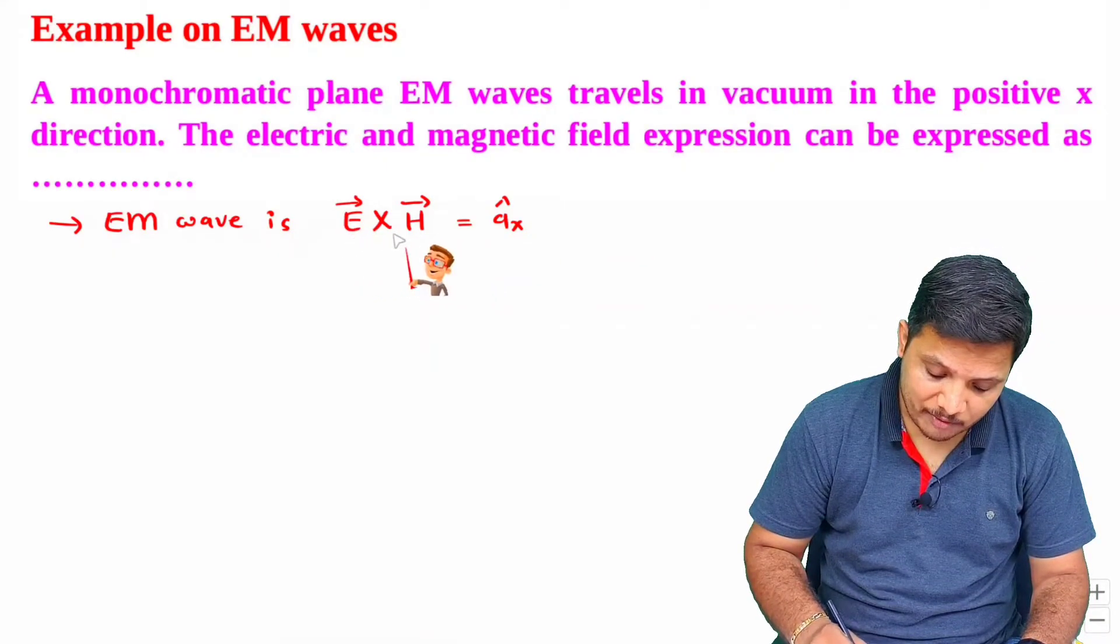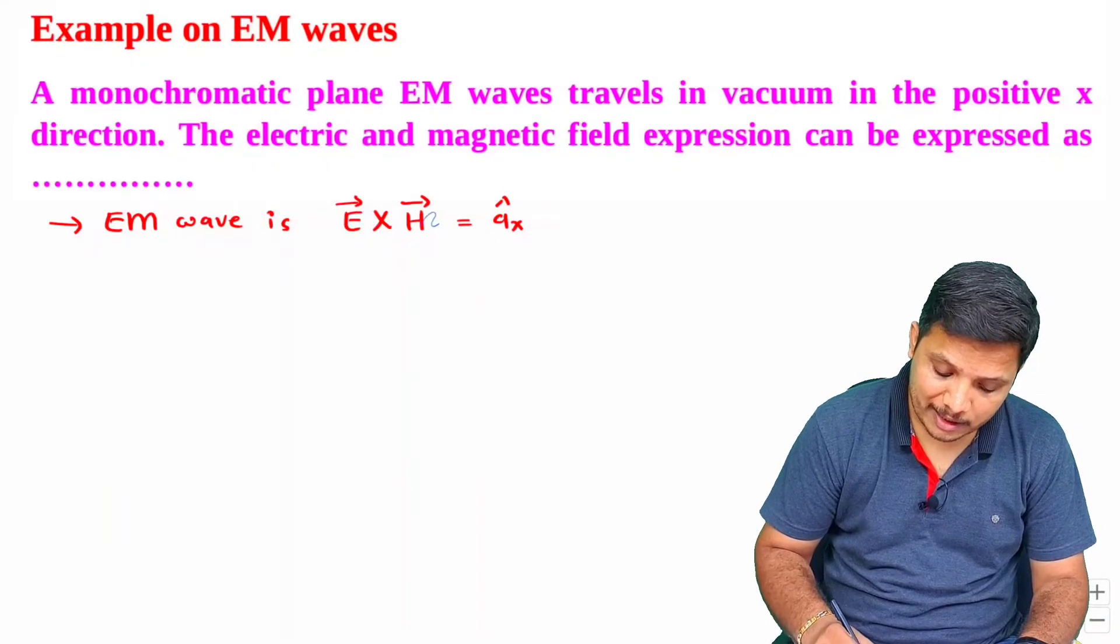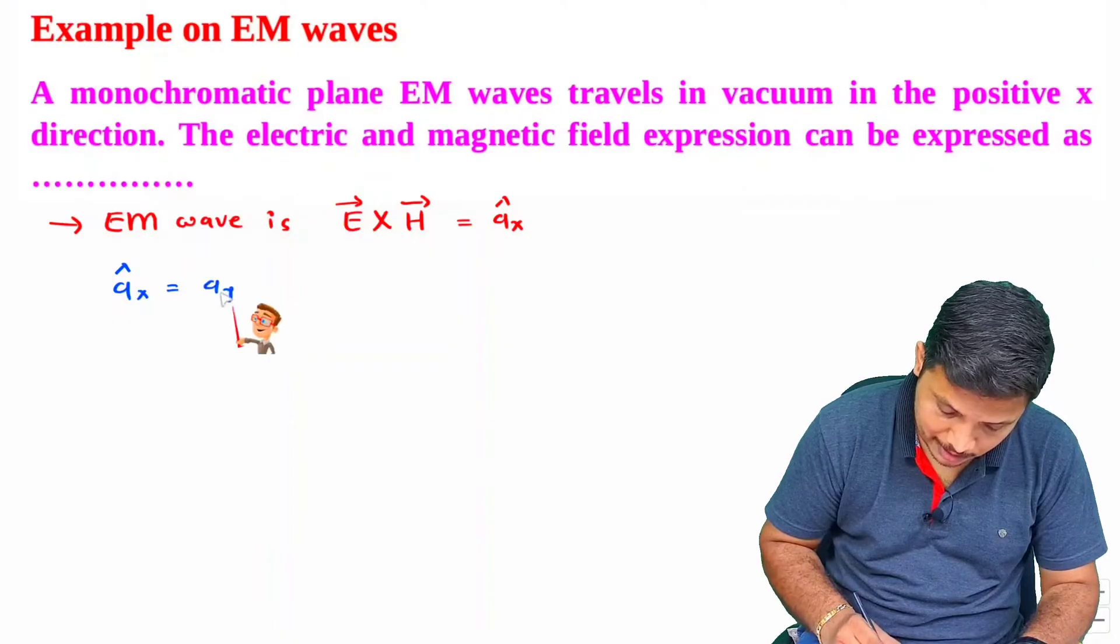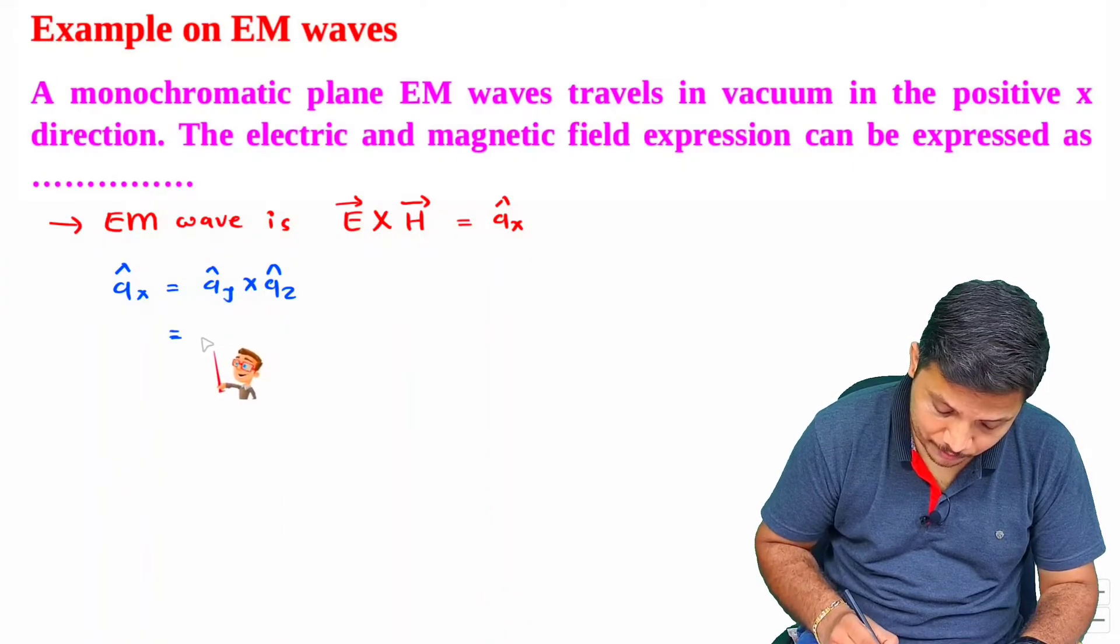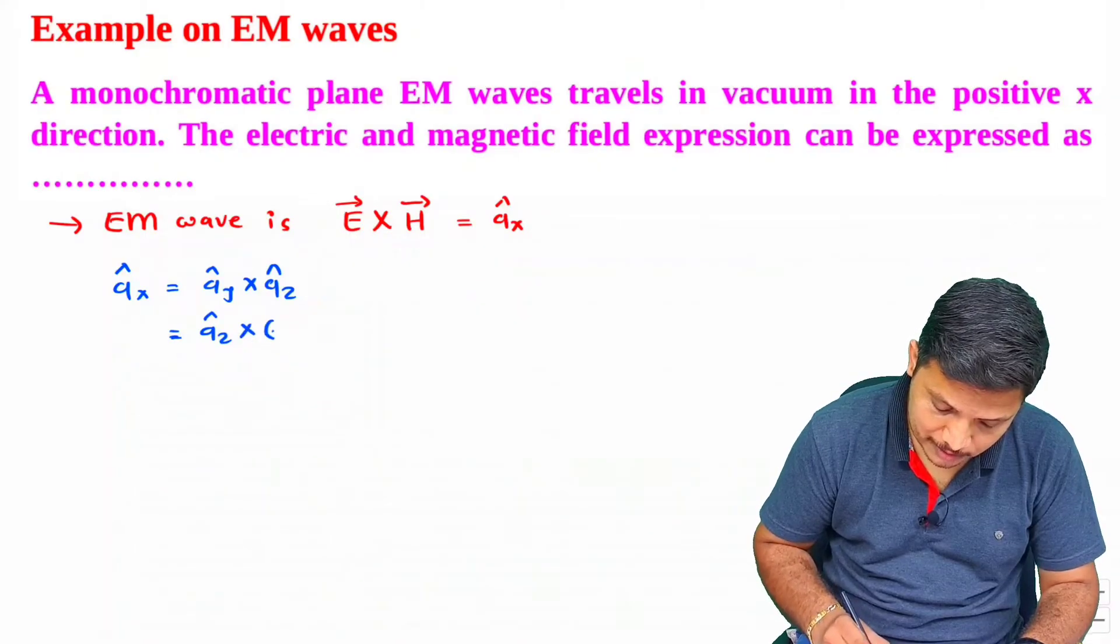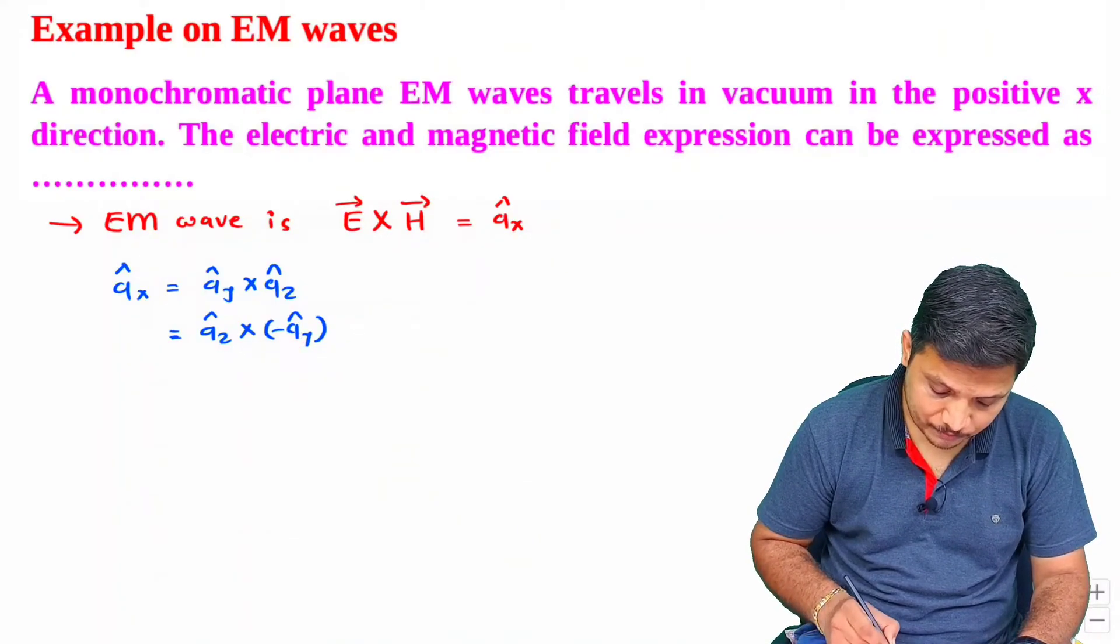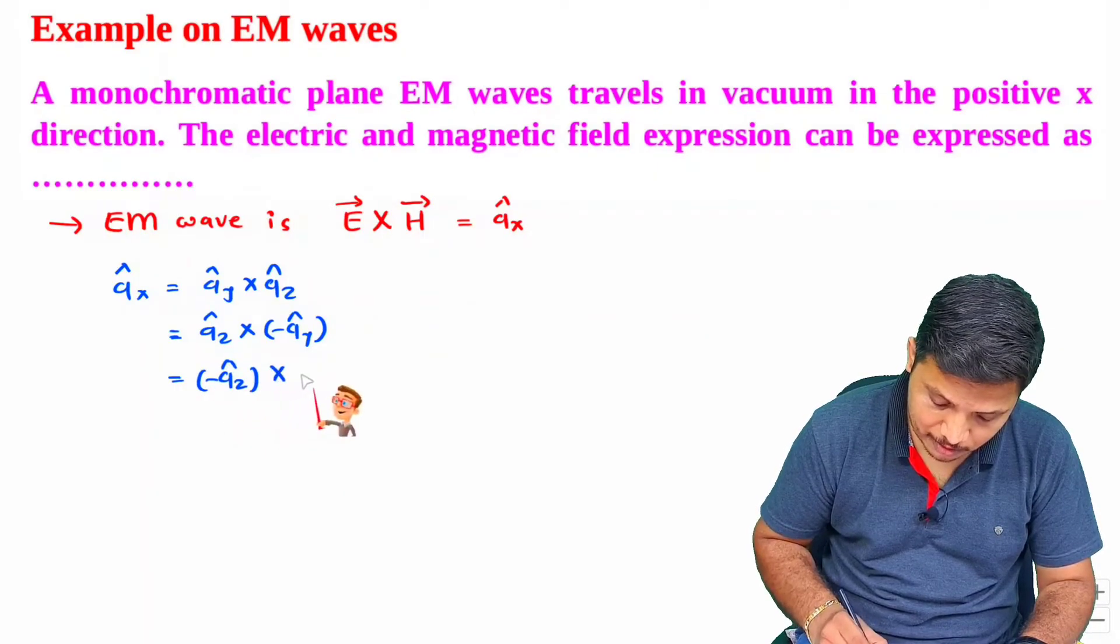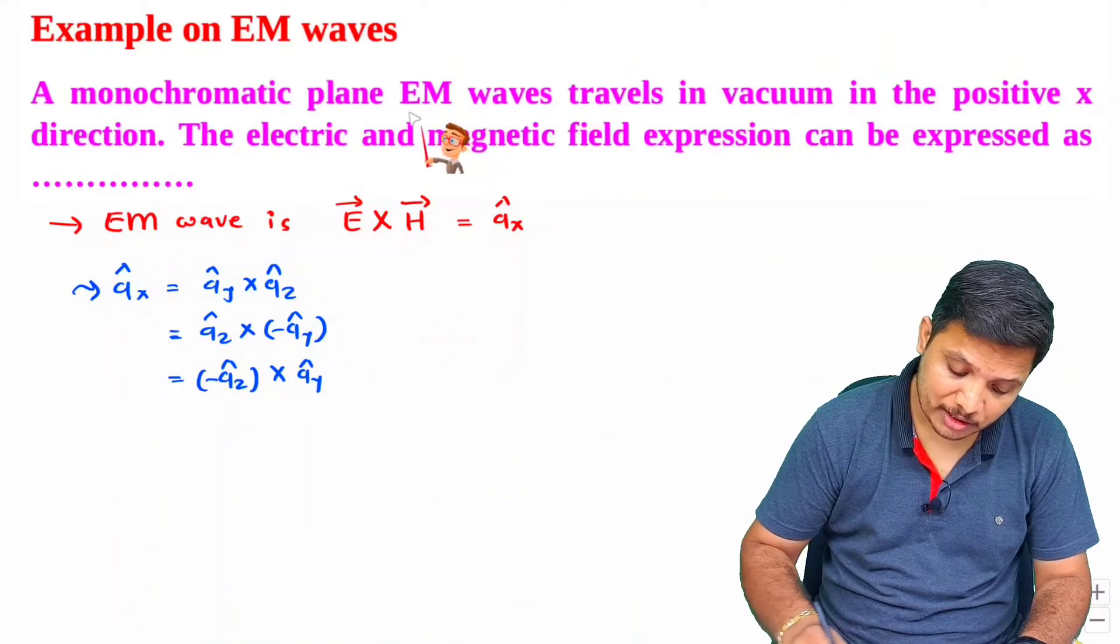So how to write EM wave equation? First of all, we need to know how many ways by which we can have Ax with E cross H. So one can have Ax as per Ay cross Az. This is one way. Second is if Ay is negative. In that case, all I need to do is Az cross minus of Ay. Sometimes you will be having Ay is negative. Now, if you have Az negative, then again, we need to have minus of Az cross Ay. So that is how three ways are there by which we can have positive x direction propagation of EM wave.